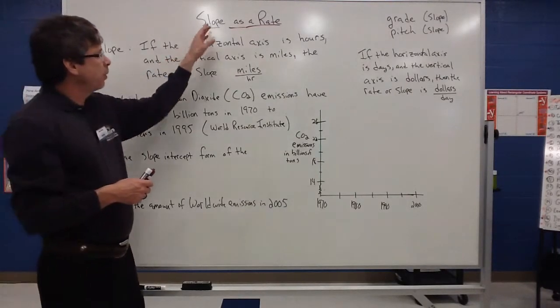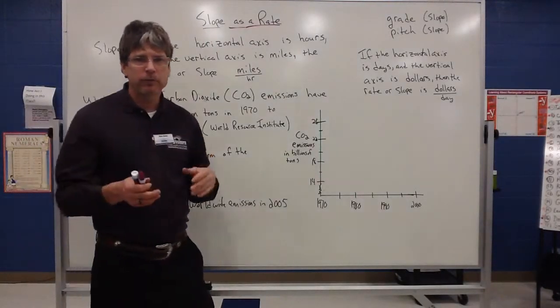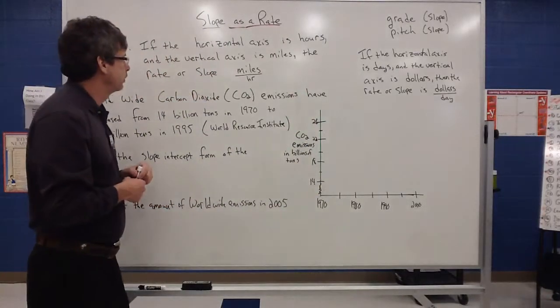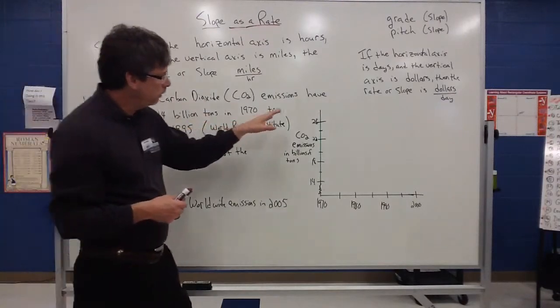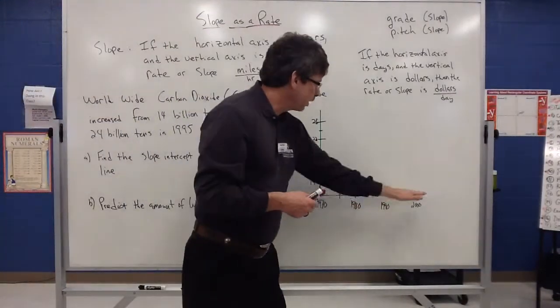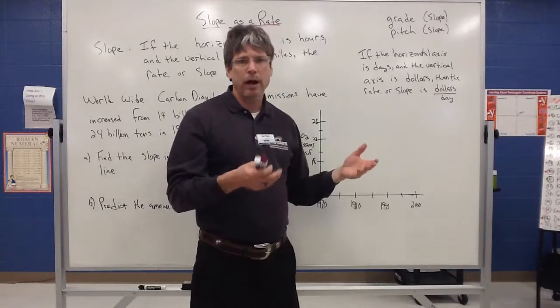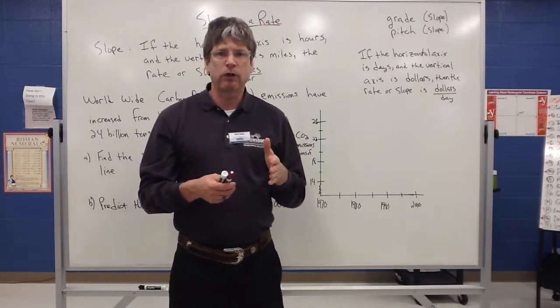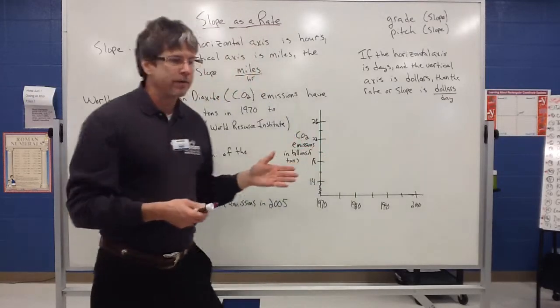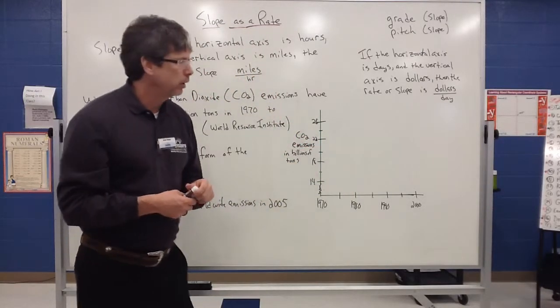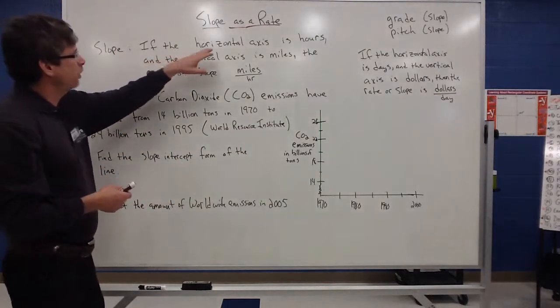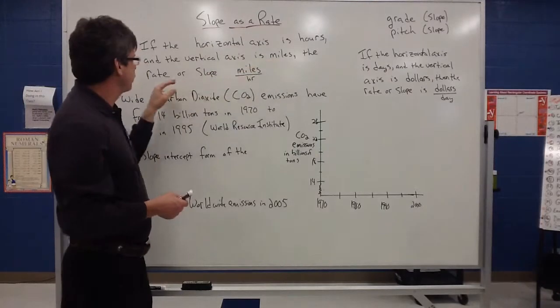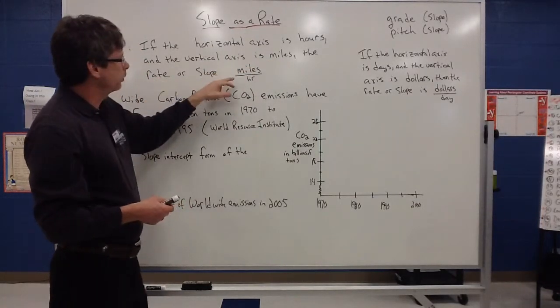Now, taking rate into the form of slope, remember slope has this concept of linearity. Work with lines, work with these linear concepts. And so we have these vertical axes and these horizontal axes. Typically in our algebra we've been just working with x and y. But in the real world, that horizontal axis is going to be defined as something, and that vertical axis is going to be defined as something. For instance, the horizontal axis could be hours and the vertical axis could be miles. Therefore, the slope or the rate would be miles per hour.